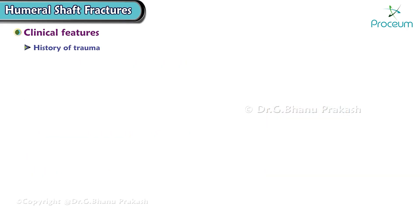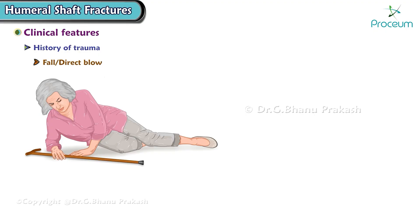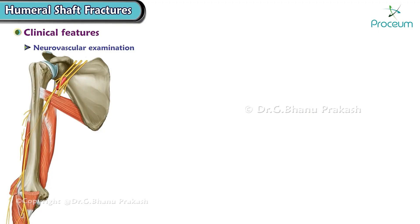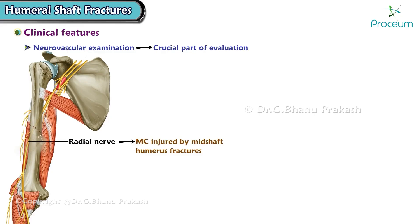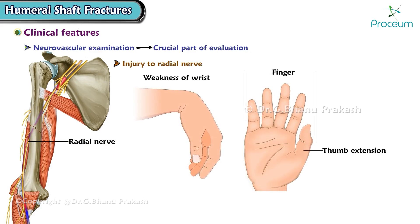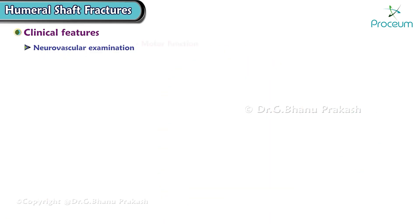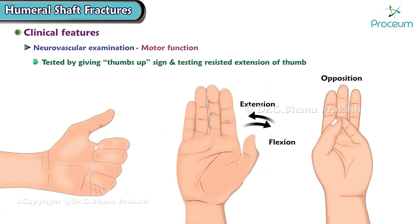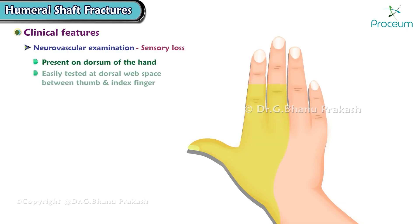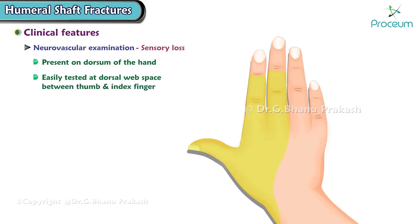Most patients will report a significant history of trauma or injury to the arm, such as a fall, a direct blow, or a high-velocity throwing motion. The neurovascular examination is a crucial part of evaluation. The radial nerve is the nerve most commonly injured by mid-shaft humerus fractures, resulting in weakness of wrist, finger, and thumb extension, and some weakness of elbow supination. Motor function can be tested by the thumbs-up sign and resisted extension of the thumb. Sensory loss may be present on the dorsum of the hand, easily tested at the dorsal web space between the thumb and index finger.